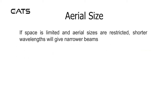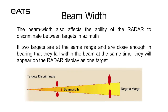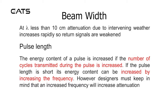If space is limited and aerial sizes are restricted, shorter wavelengths will give narrower beams. The beam width affects the ability of the radar to discriminate between targets in azimuth. If two targets are at the same range and are close enough in bearing that they fall within the beam at the same time, they will appear on the radar display as one target. At wavelengths less than 10 centimetres, attenuation due to intervening weather increases rapidly, so return signals are weakened.